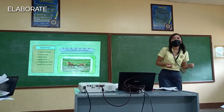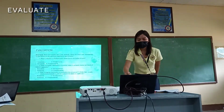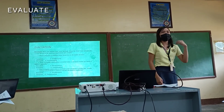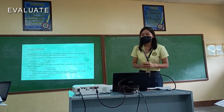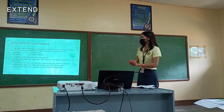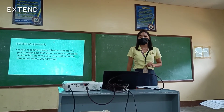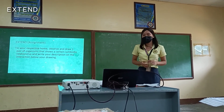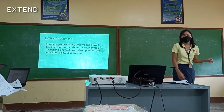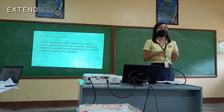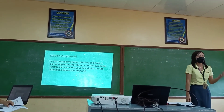In order to measure how much you have learned from this lesson, we will have a short quiz containing five items. I will give you five minutes to answer. Time's up, please pass your paper. For your assignment, observe and draw a pair of organisms at home that shows a certain symbiotic relationship, and write a description of the interaction below your drawing. Any questions or clarifications? None. This is the end of our lesson for today. See you next meeting.